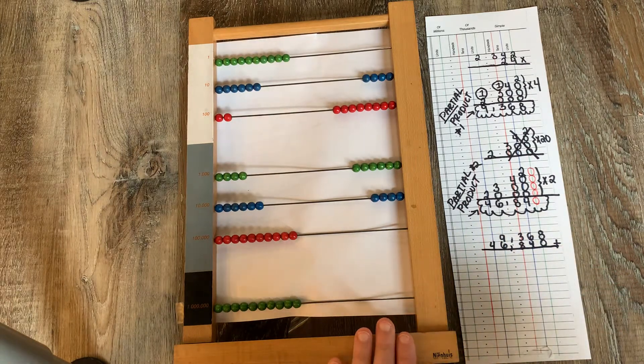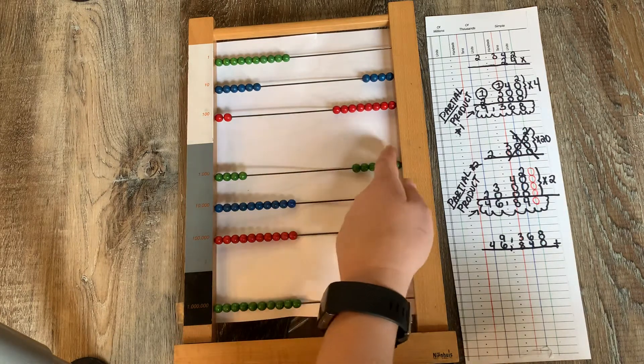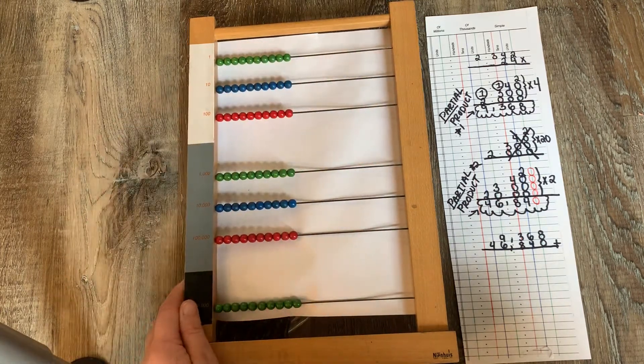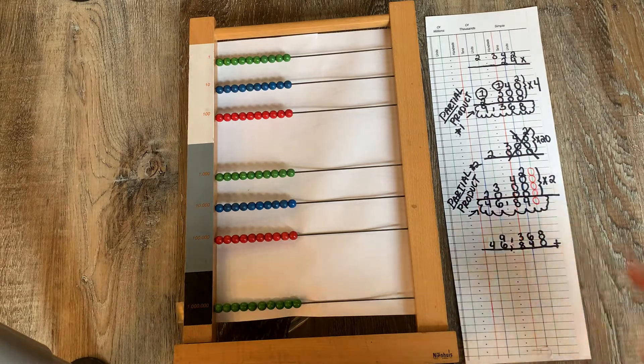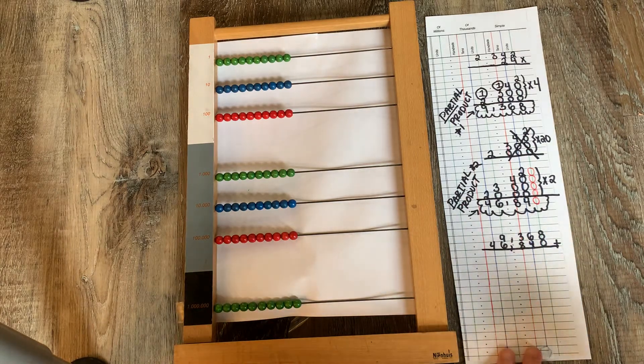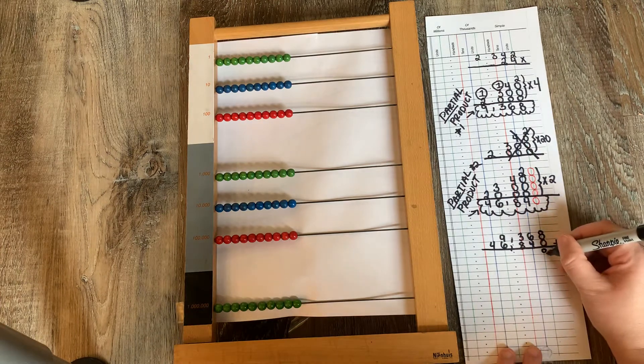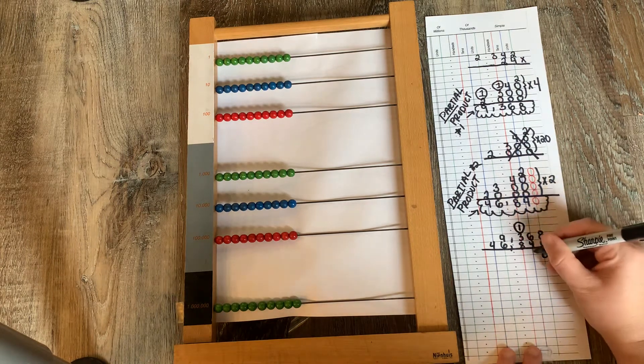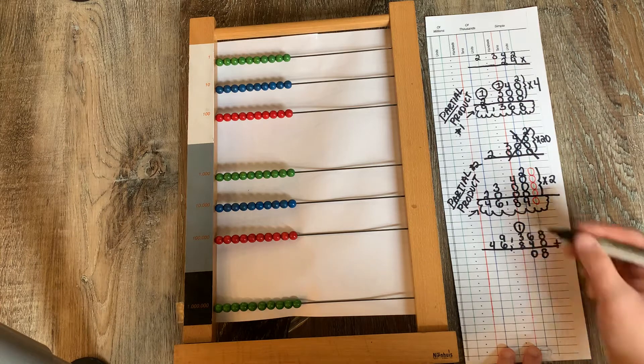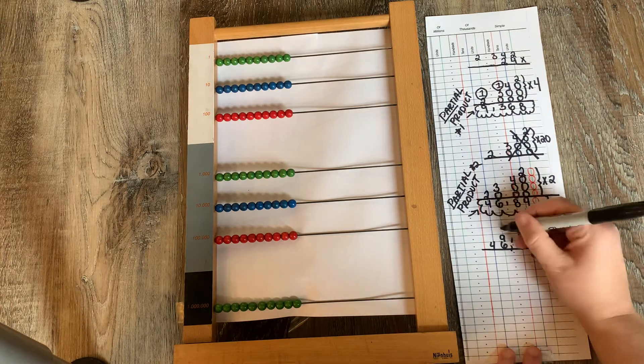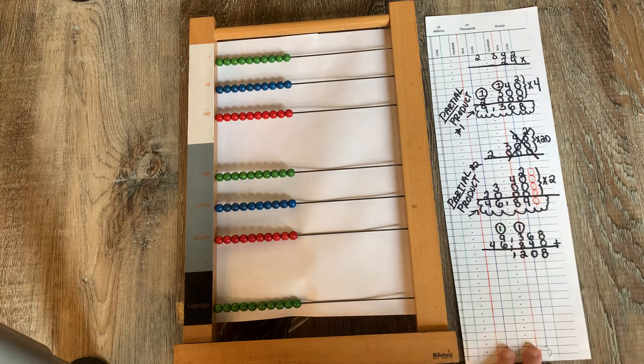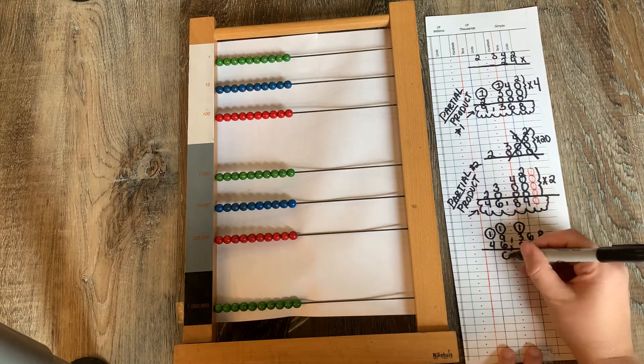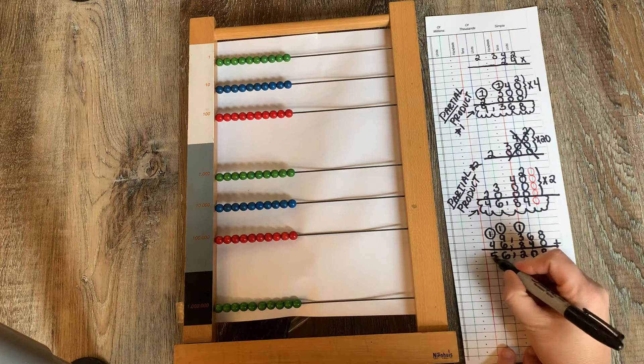Now you could do this on the large bead frame or if you're doing this lesson, you've probably had a lot of experience doing addition on the large bead frame or with other material, and you should know how to do addition at this point. So let's do that. Eight plus zero is eight. Six plus four is 10. Eight plus three plus one is 12. Nine plus six plus one is 16. And four plus one is five.